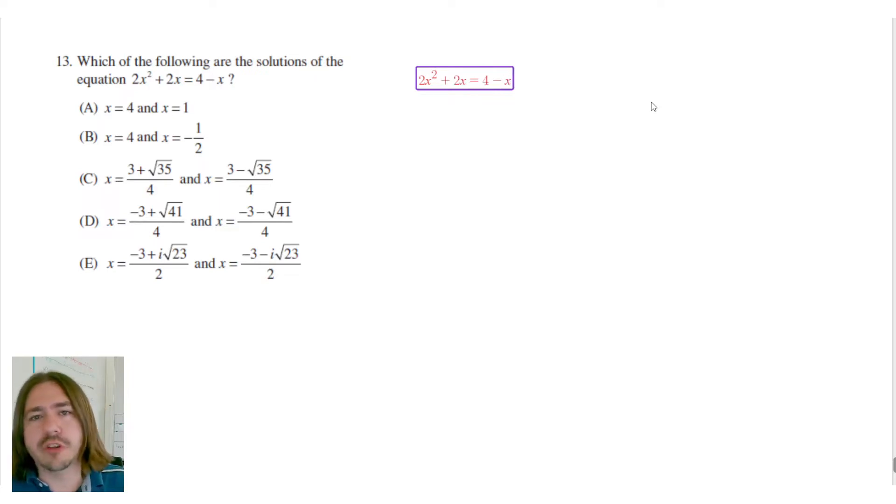Whenever you're solving a quadratic equation, you always want to set it equal to zero. Whether you're going to use factoring or the quadratic formula to solve it, either way you need it to be equal to zero. So the first step here is going to be to move all this stuff on the right hand side of the equation to the left.